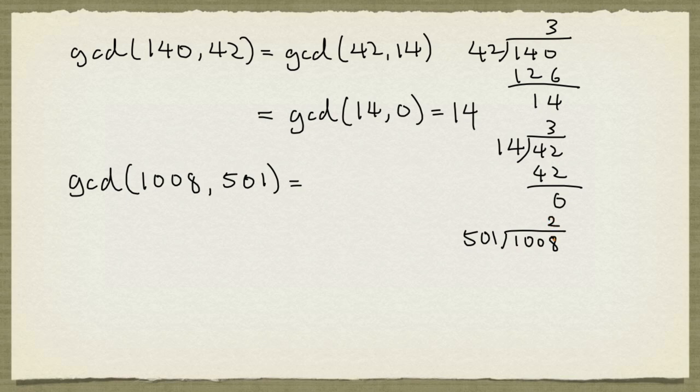So if we take 2 times 501, I get 1002 with a remainder of 6. And so the GCD of 1008 and 501 is the same as the GCD of 501 and 6.